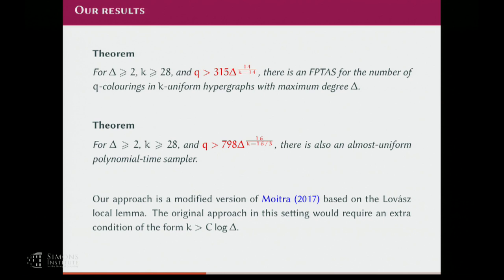The method we use is completely different from correlation decay and the polynomial method. It's a more refined version of a method by Moitra, closely related to the Lovász Local Lemma. Our original motivation was to understand Moitra's method — what is essential and what is unnecessary. We get rid of one auxiliary process of Moitra: in his original approach, the auxiliary process introduces an extra condition involving K and delta (not Q), but we eliminated this.